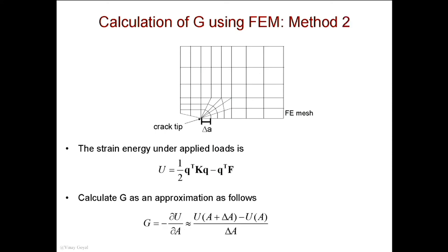The second method is even simpler: run Abaqus and get the total strain energy for one crack length, then run Abaqus again with the crack length increased just a little bit. Calculate the difference in strain energy between the two models, divide by the amount you extended the crack, and you get G. These two methods match each other well. A third method is a contour integral that Abaqus provides — I won't cover the theory here, but you can find it in a fracture mechanics textbook.